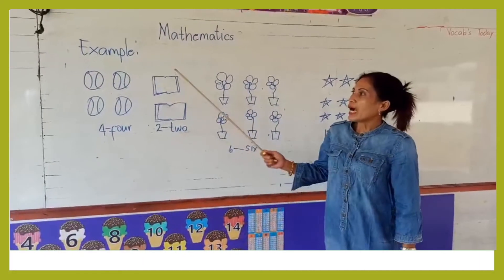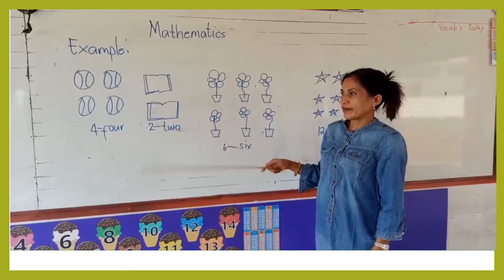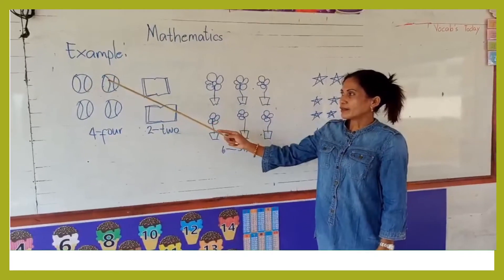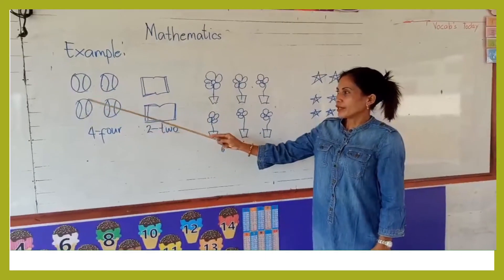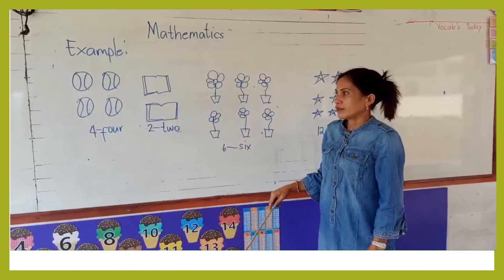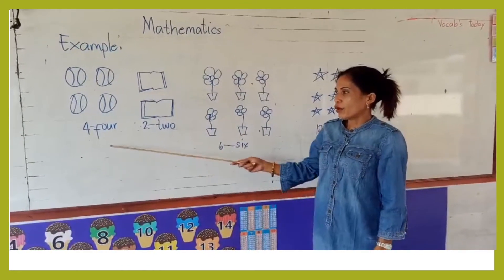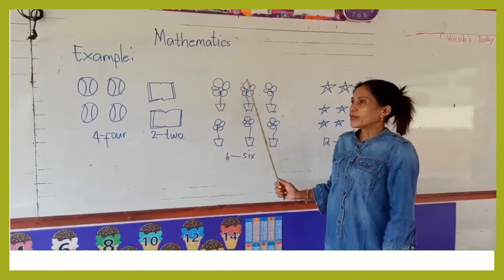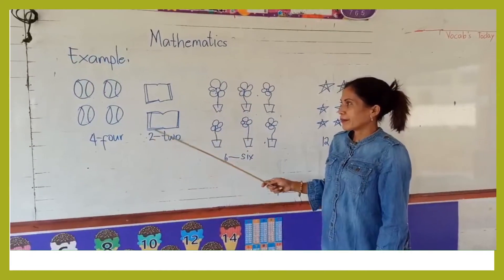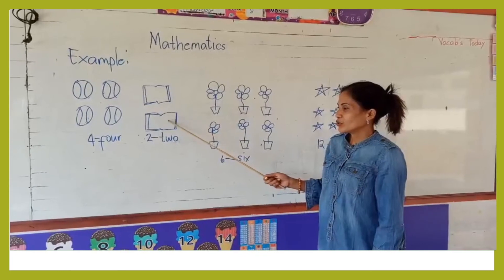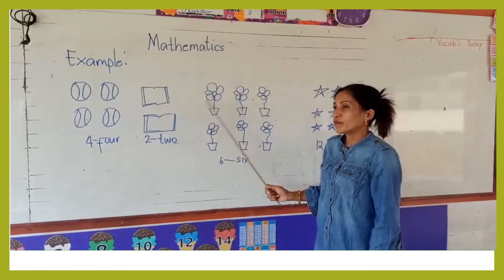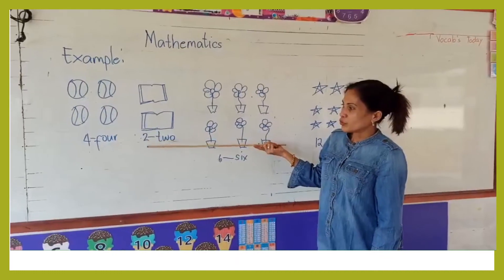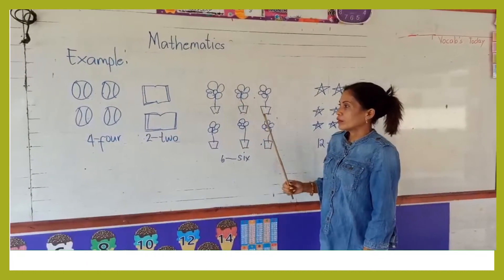Example. How many balls are there? One, two, three, four. There are four balls. How many books are there? One, two. How many books are there? There are two books. Next.